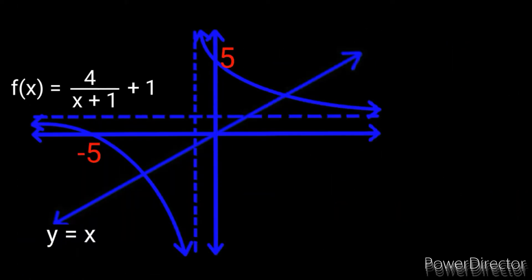Here is the first question. You are given the hyperbola f(x) = 4/(x+1) + 1, and you are also given the equation of a straight line y = x. The hyperbola has a y-intercept of 5 and an x-intercept of negative 5, while the y-intercept of the line y = x is 0 — so it passes through the origin.